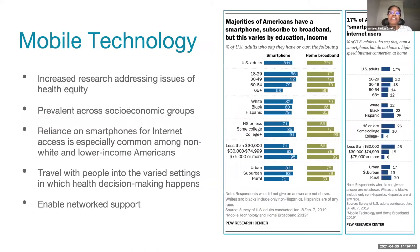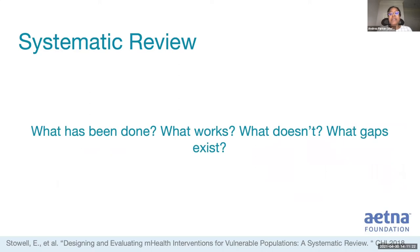Researchers have increasingly explored how mobile technology can address issues of health equity. Mobile platforms have increased prevalence across socioeconomic groups — they are particularly relied upon amongst non-white and lower-income Americans for internet access, groups that experience disproportionate burden of poor health. They travel with people into the varied settings in which health decision-making happens, and they also facilitate network support. We conducted a systematic review to examine how mHealth tools have been designed to promote well-being in underserved and marginalized groups — what works, what doesn't, what gaps exist.